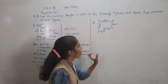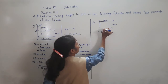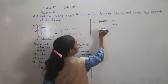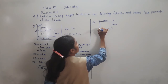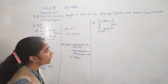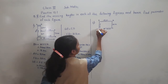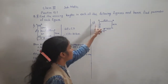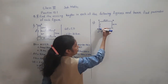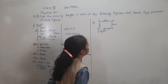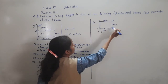So we have to find EF. For that, we will extend CD up to here, and here I will write the name G. So now we have a rectangle ABCG. If you observe, AB is equal to CG because opposite sides of rectangles are equal.